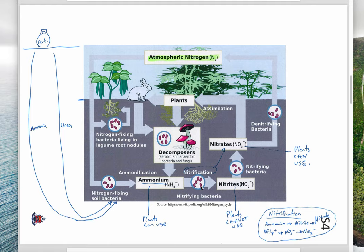The three-step process of ammonification to nitrites to nitrates is called nitrification — this is where nitrogen is changed through different forms. Remember, the middle step, nitrites, cannot be used by plants and can be toxic to them. However, the next step, nitrates, plants can actually use. So nitrification is the conversion of ammonium through nitrite to nitrate.